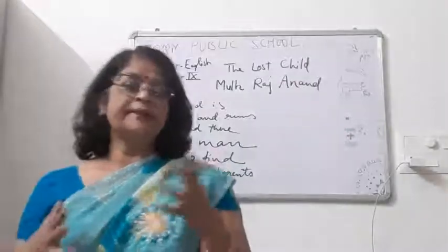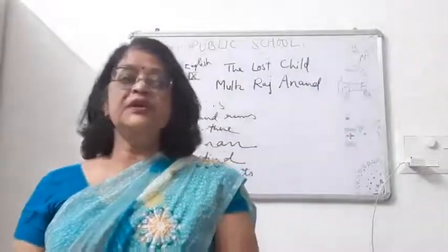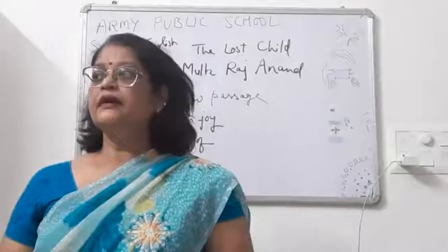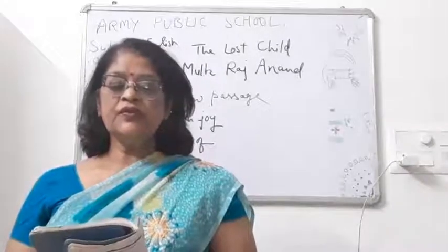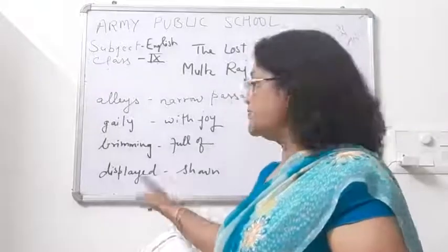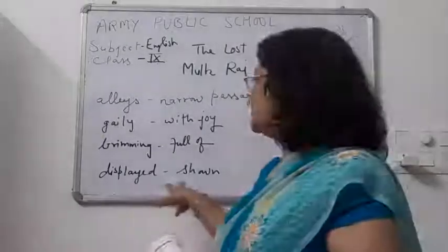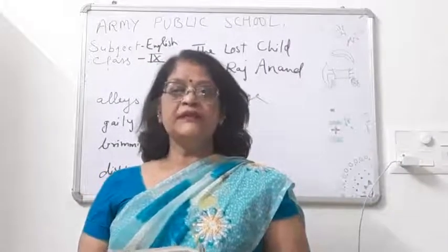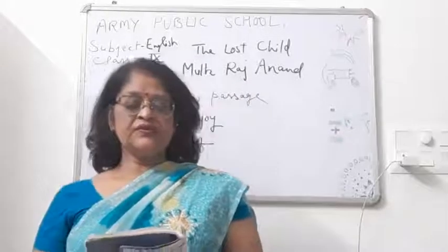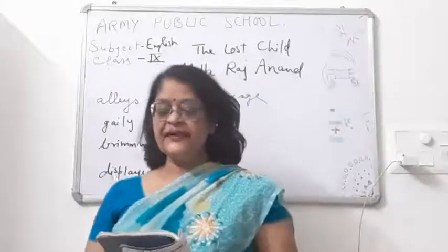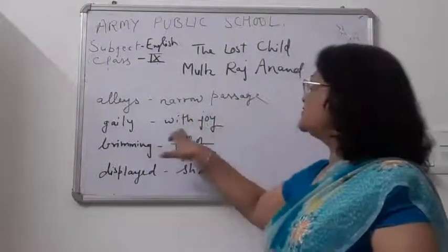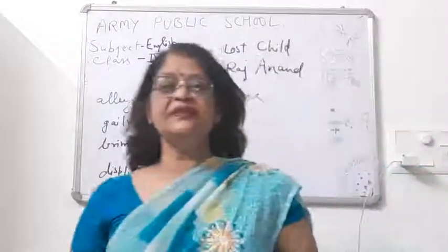This is all about the background of the story. I have told you about the writer of the story. Now I will be reading the lesson 'The Lost Child' and doing the explanation. A child goes to a fair with his parents — he is happy and excited and wants the sweets and toys displayed there. 'Displayed' here means shown. But his parents don't buy them for him. It was the festival of spring, from the wintry shade of narrow lanes and alleys — alleys are the narrow passages.